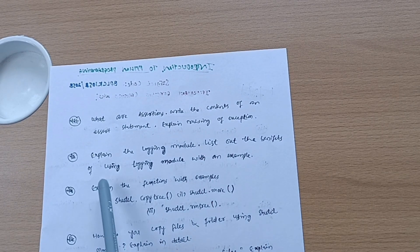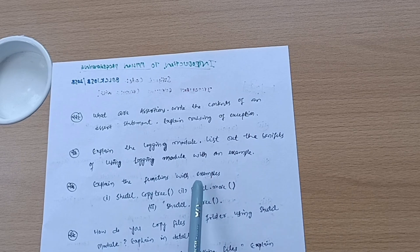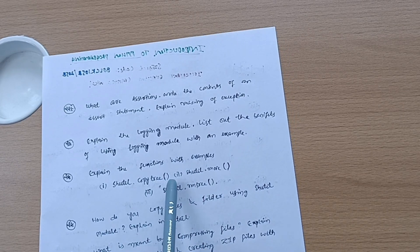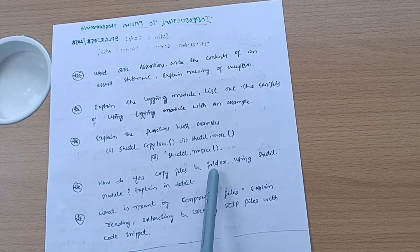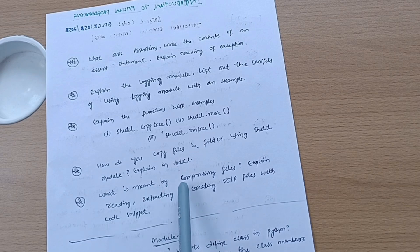Explain the logic module, list out the benefits of using logic module with an example. Explain the functions with examples like shutil.copytree, shutil.move, and shutil.rmtree. How do you copy files and folders using shutil module? Explain in detail. What is meant by compressing files? Explain writing, extracting, and creating zip files with code snapshots. This much is all about Module 4.